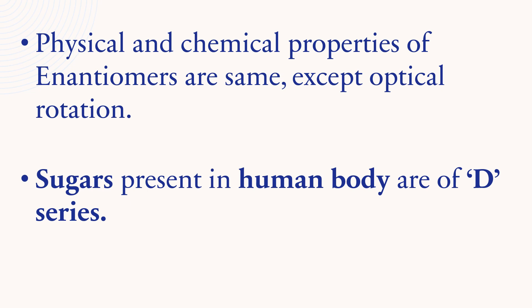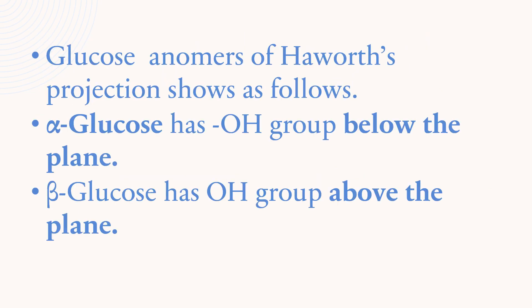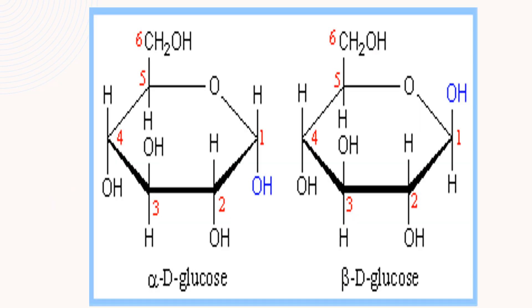The physical and chemical properties of enantiomers are the same except for optical rotation. Sugars present in the human body are of D-configuration. Glucose anomers in Haworth's projection are as follows: alpha-glucose has the OH group below the plane, and beta-glucose has the OH group above the plane. In alpha-D-glucose, OH is below the plane, and in beta-D-glucose, OH is above the plane.